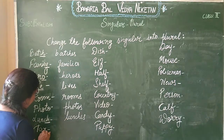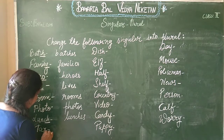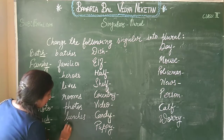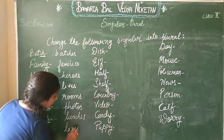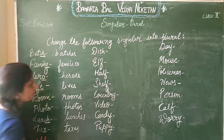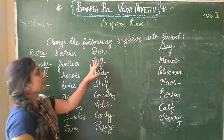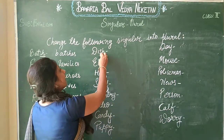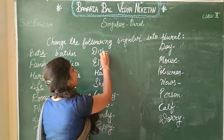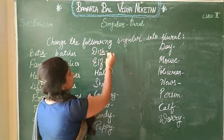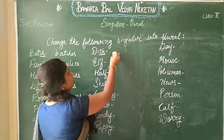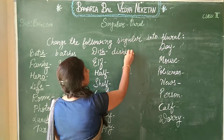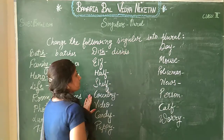Next: at the end there is X — 'tax' becomes 'taxes'. And the next word is 'dish'. In this word at the end there is SH. So the spelling will be 'dishes'.